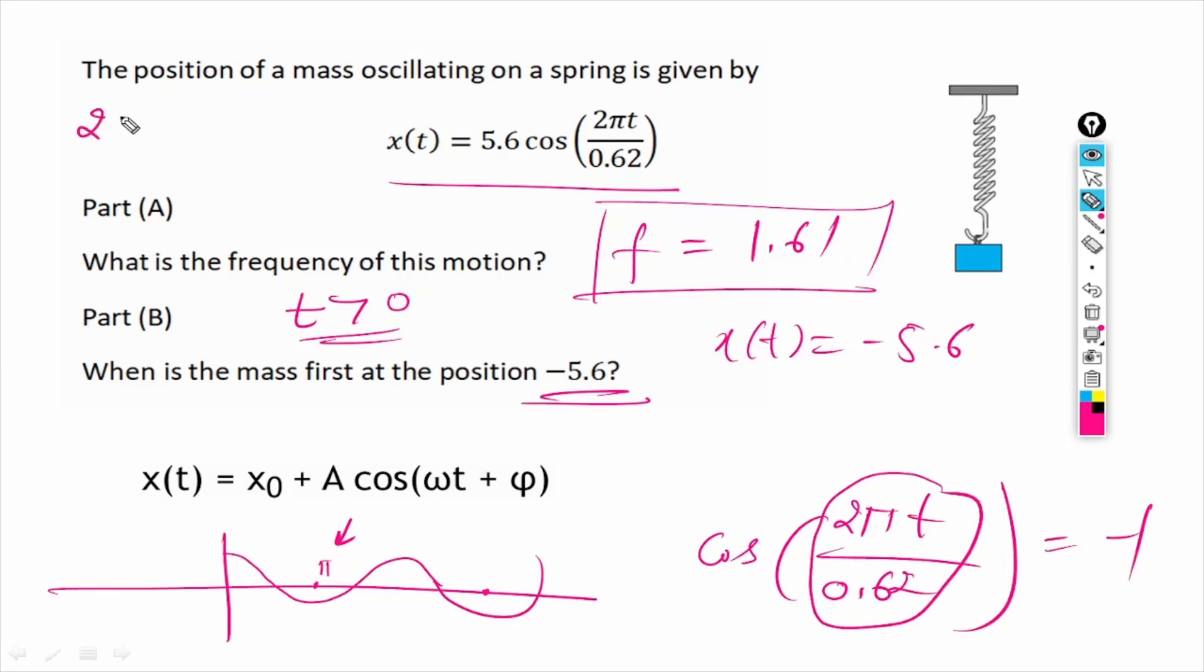So that means, let's change the color, we have 2πt over 0.62 equals π. So π will get cancelled. So here we will have t equals 0.62 divided by 2.